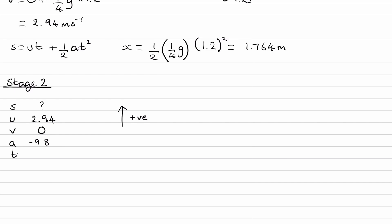And then we can finally, with these quantities, work out what S is. So we can use the equation that links these four quantities together, the three that we know and the one that we want to work out, is V squared is equal to U squared plus 2AS. V is zero, U squared is 2.94 squared, plus 2AS. So expanding this out, zero is equal to 8.6436 minus 19.6S.